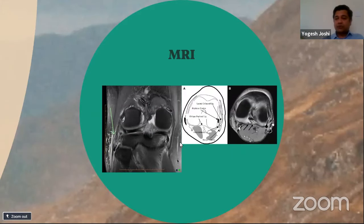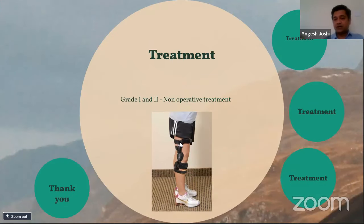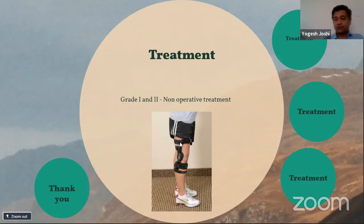MRI is the gold standard for PLC injuries and will identify the structures injured, with main focus on the popliteus tendon, lateral collateral ligament, and popliteofibular ligament. Once you know which structures are torn and to what degree, you can devise a treatment plan. For grade 1 or grade 2 injuries, treatment is non-operative: a varus-valgus stabilized brace for about six weeks, allowing weight-bearing and a good range of movement, with graduated degrees of flexion during the first six weeks.